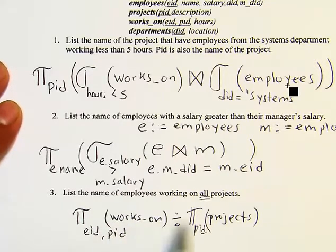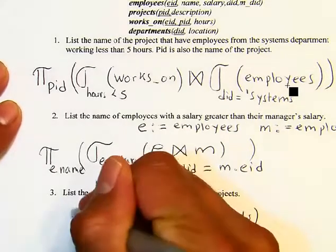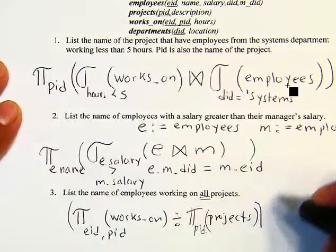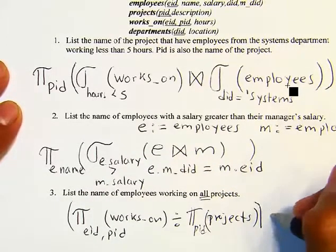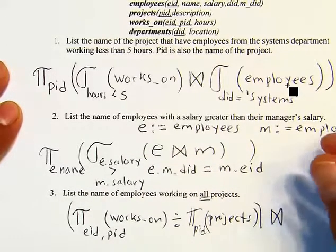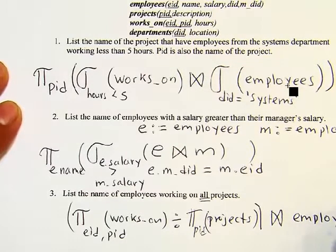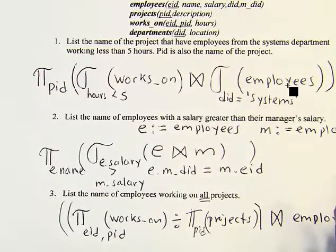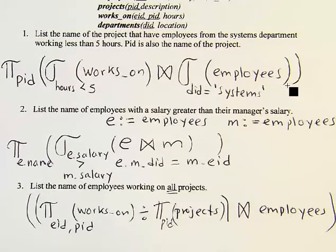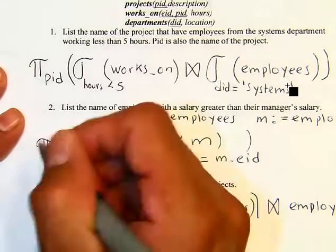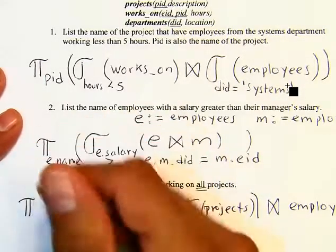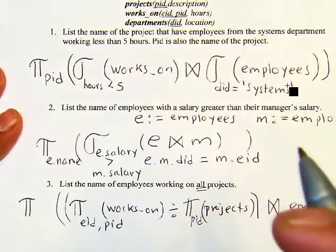Since the division result only gives us employee IDs, we join it with the employees table to retrieve the names. Finally, we project on the employee name, and that is the answer for number three.